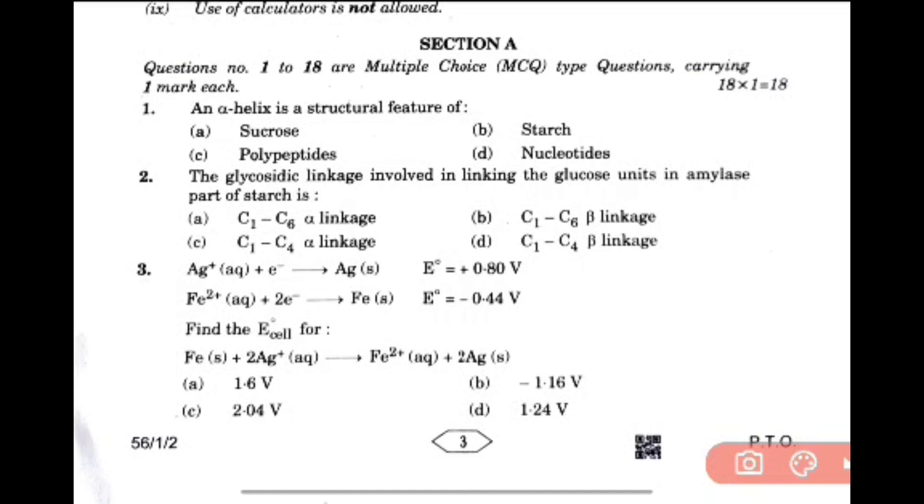Question 1: Alpha helix is a structural feature of polypeptides, that is option C. Question 2: The glycosidic linkage involved in linking glucose units in amylose is C1-C4 alpha linkage. Question 3: If you solve this, it will be option D, 1.24V. Cathode minus anode.